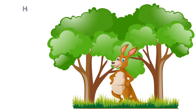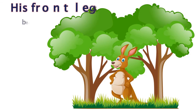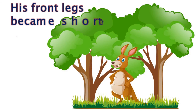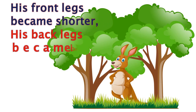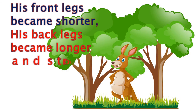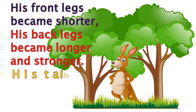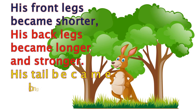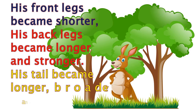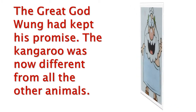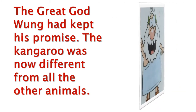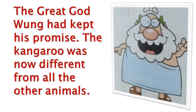The kangaroo hopped faster and faster. Then he folded his front legs, which became shorter. Later, his back legs became longer and stronger. Also, his tail became longer. Now he no longer looked like a rabbit. The great god Wang had kept his promise. The kangaroo was now different from all the other animals.